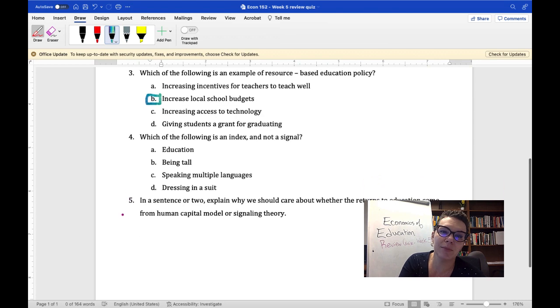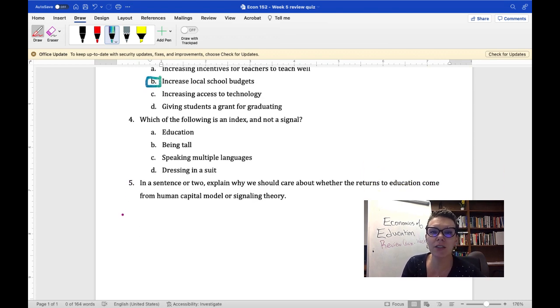And then the last multiple choice question, which of the following is an index and not a signal? Remember both indexes or indices and signals give employers and other agents information, but an index is difficult to change whereas a signal is easy to change. So education, speaking multiple languages, how a person dresses, those are all signals that are very easily changeable. Being tall is an index because you can't change it, but there might be some employers and other actors who believe that there are traits tied to tallness.